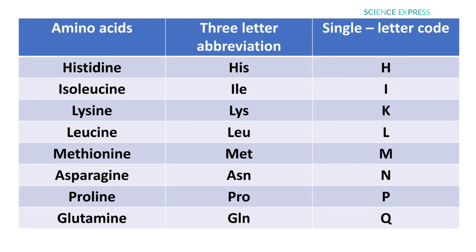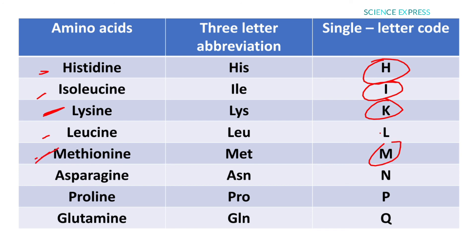Other amino acid single-letter codes include: histidine represented by H, isoleucine by I, and lysine — very important — represented by K. Leucine is represented by L, and methionine by M. Notably, methionine and cysteine are the two sulfur-containing amino acids, meaning their basic structure contains a sulfur atom. Asparagine is represented by N, proline by P, and glutamine by Q.